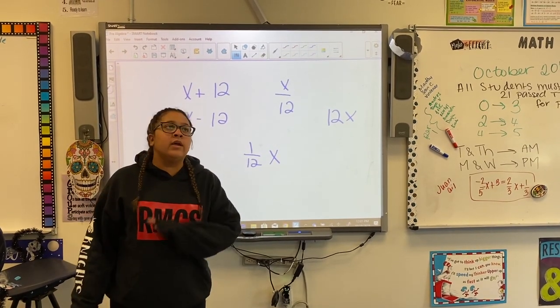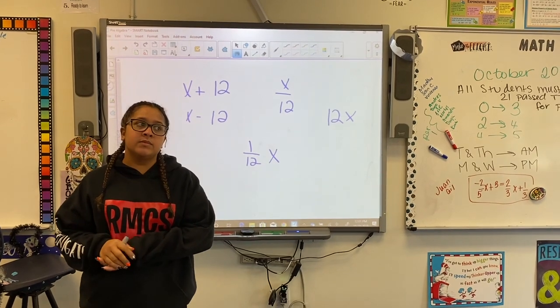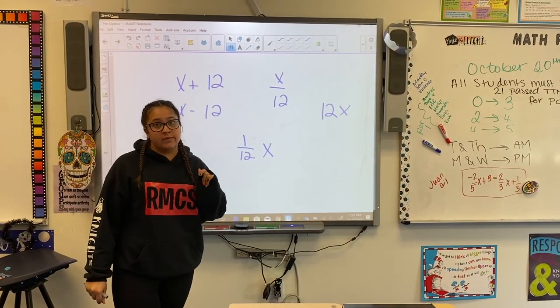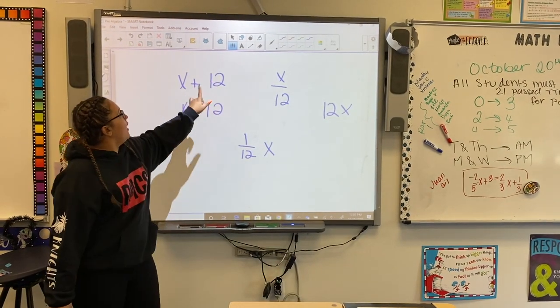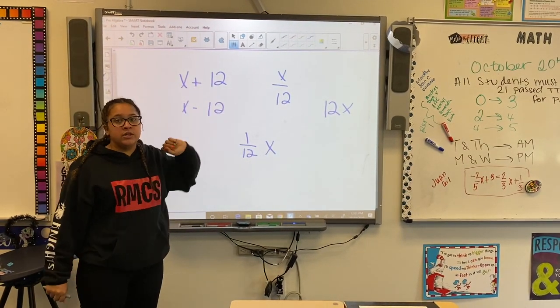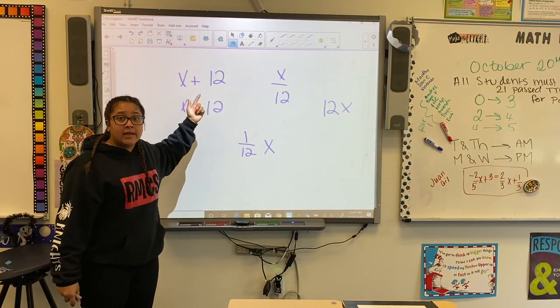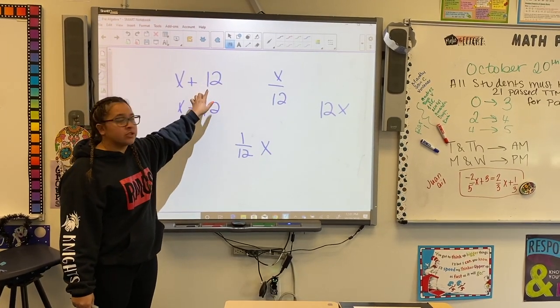Alright guys, so here's just a quick review, a little reminder before we get into dealing with fractions and how to get rid of fractions that are multiplying a variable. When we look here, x plus 12, our question is, what is happening? What is the 12 doing to the x? Adding, right? So our inverse operation for this would be subtraction.